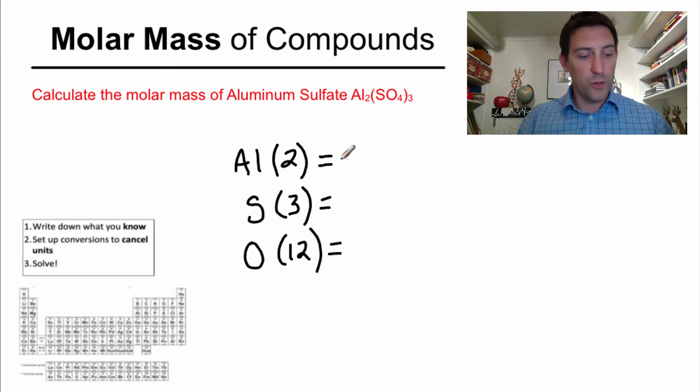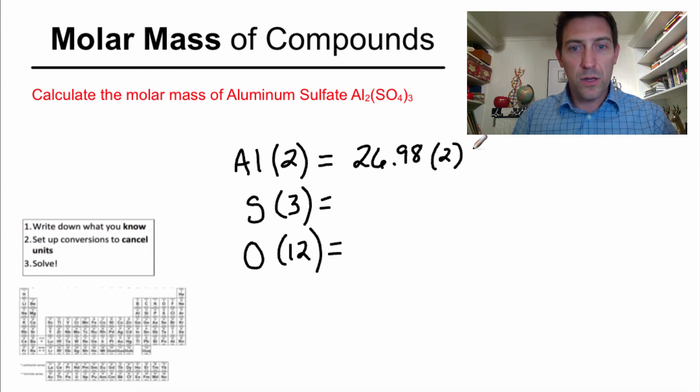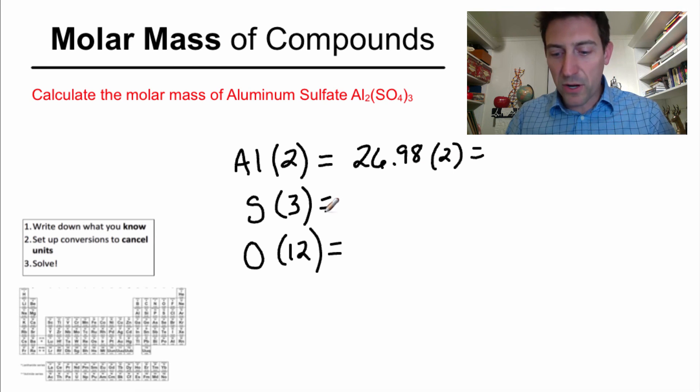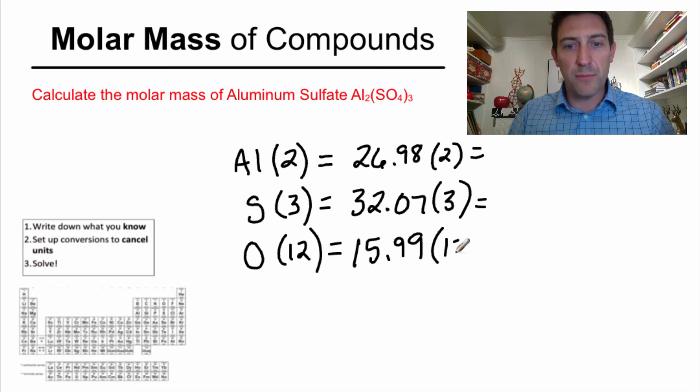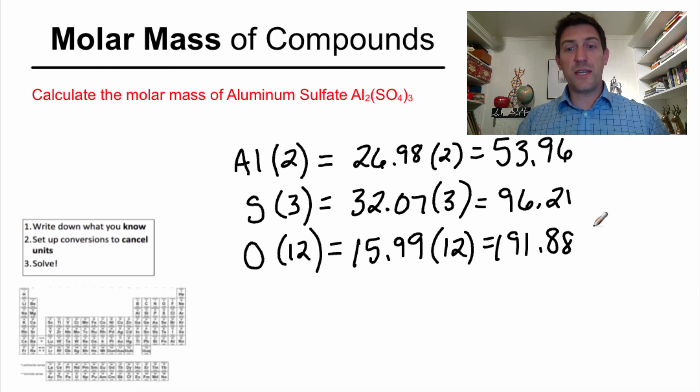Now I need to look up the mass of each one of these, and then multiply it. So aluminum, we've looked it up several times, is 26.98, 26.98 times two. I'll get that in a second. Sulfur is right over here, number 16, and it is 32.07. There are three of those. And then I've got oxygen, which is, I use 15.99. If you're using 16.0, that's totally fine, times 12. And then I just need to do the quick math. I've got all my numbers up here now, and I just need to add them together to get the overall molar mass of this entire molecule.